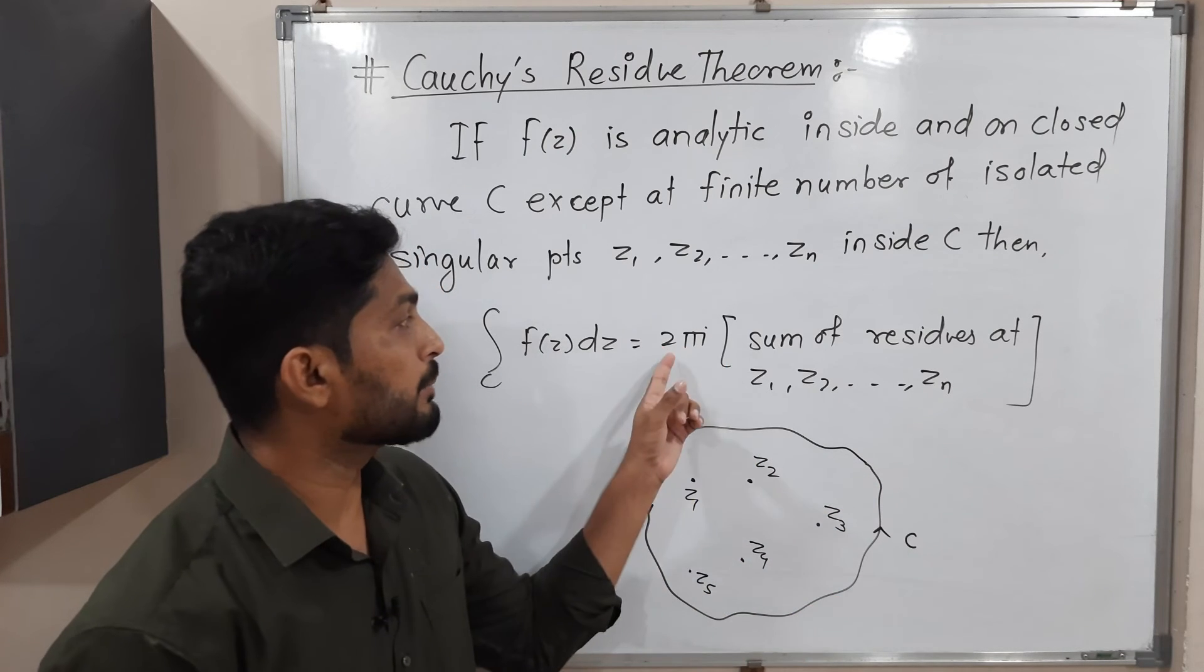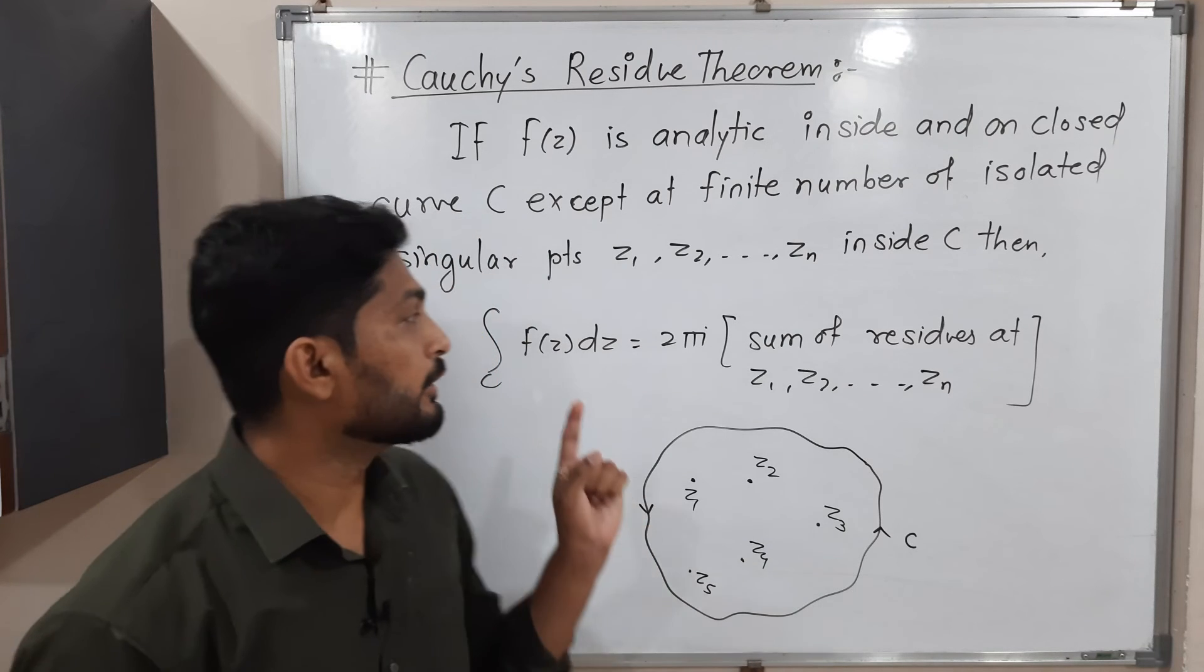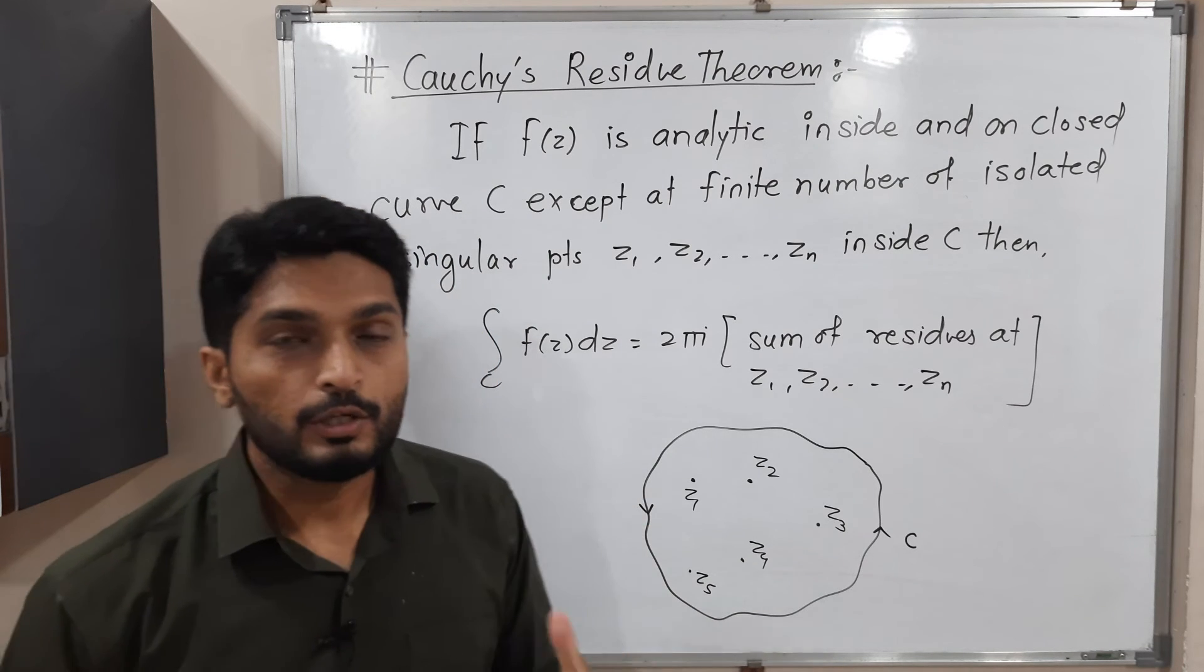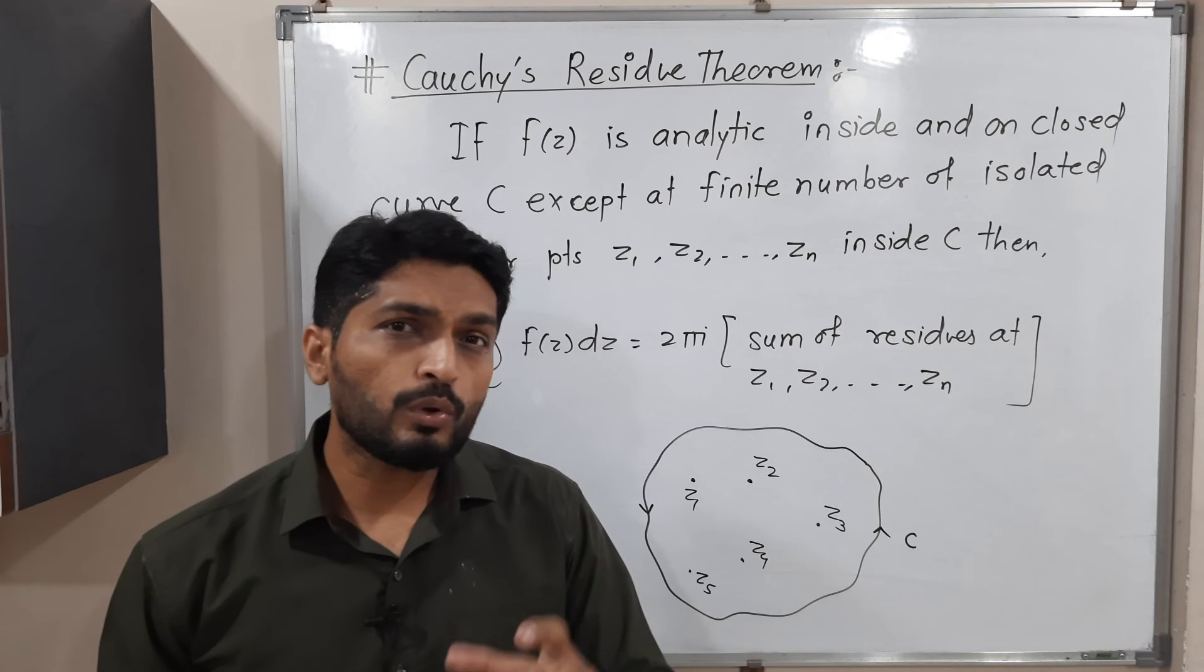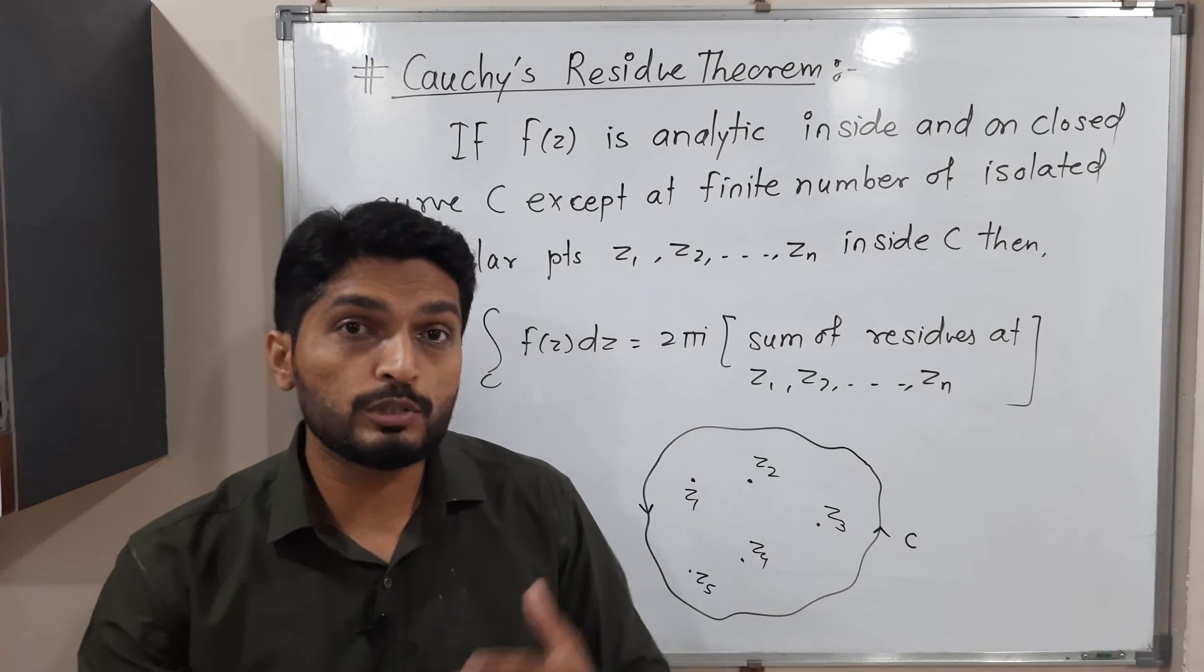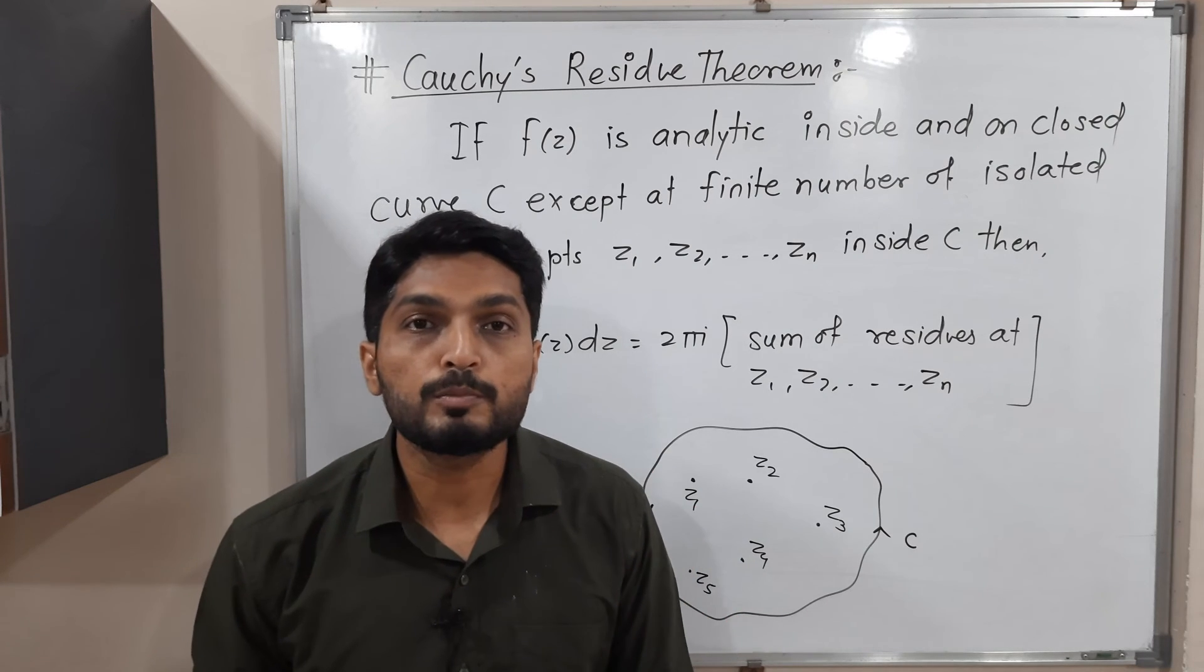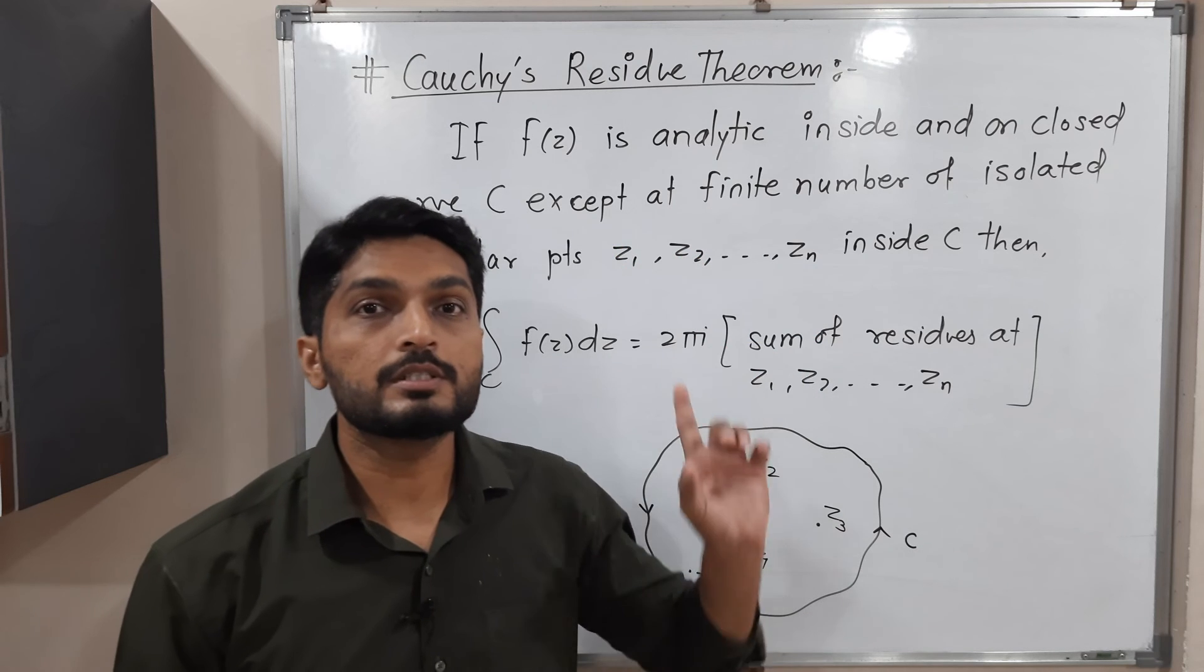we multiply it by 2πi. By doing this, you will get the value of this integration. So it's magic—without solving an integration, without using a formula of integration, just by using the concept of residue, we are getting the value of the integration. This is possible only because of Cauchy's Residue Theorem.